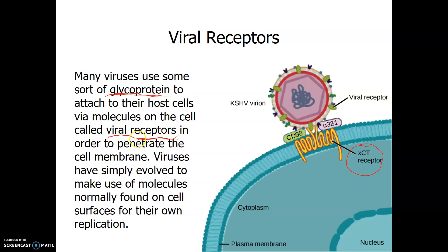The molecule in the plasma membrane of the host cell that the virus attaches to is called the viral receptor, and this step in the infection process is called the attachment step. Depending on the host cell, sometimes the entire virus will enter the cell, but many times the virus will only inject its DNA or RNA into the cell.